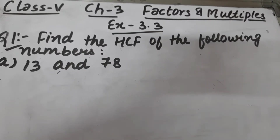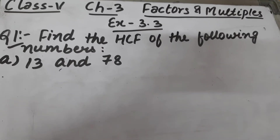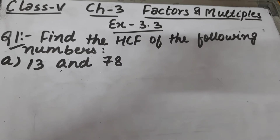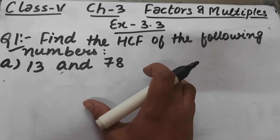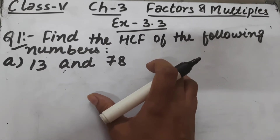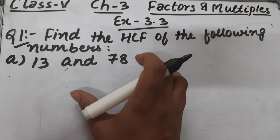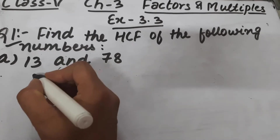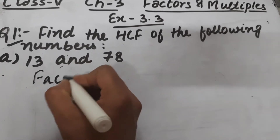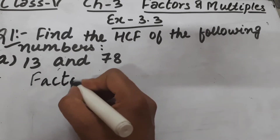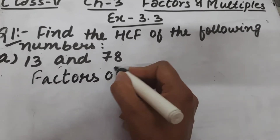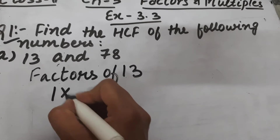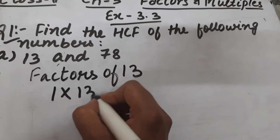Let's start question number one of exercise 3.3. The question is: find the HCF of the following numbers. For part A, we have 13 and 78. First of all, we have to find all the factors of 13.